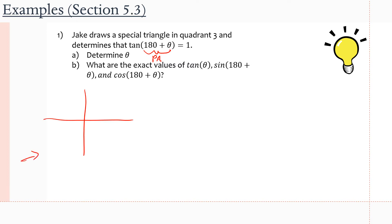We have our Cartesian plane. It says in quadrant three, which is this quadrant right here, Jake draws a special triangle. So we have our initial arm, and our terminal arm will be somewhere in this quadrant. Here's our origin, and our terminal arm will be going this way. Jake draws a triangle with the x-axis, making a 90-degree angle. This whole angle from the initial arm to the terminal arm is 180 + θ, which is our principal angle.